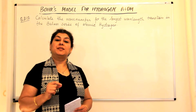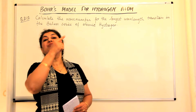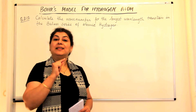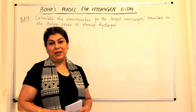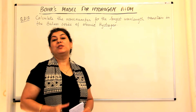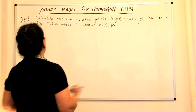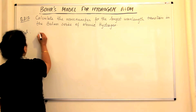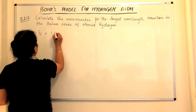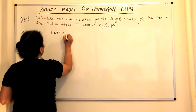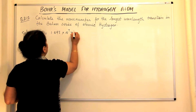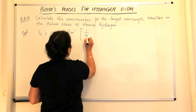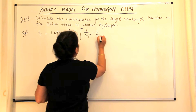We know the Balmer series are formed when an electron jumps back from higher energy levels to the second energy level, that is N equals 2. For Balmer series, a formula was given by Rydberg. The formula for the wave number of the Balmer series is 1.097 × 10⁷ meters inverse, into 1 upon N1 square minus 1 upon N2 square.